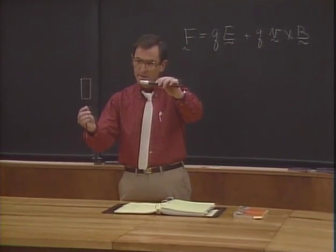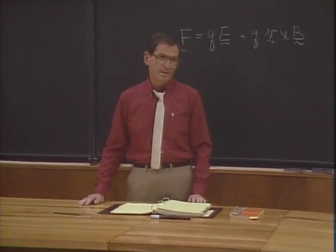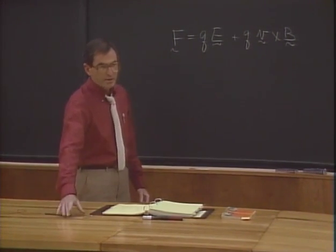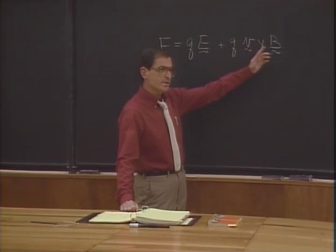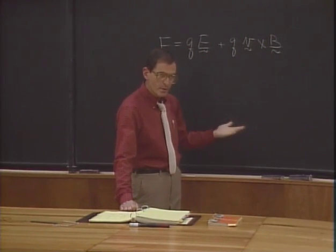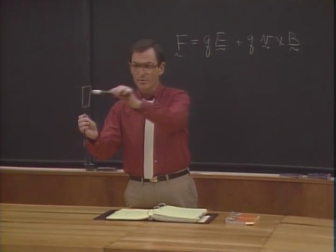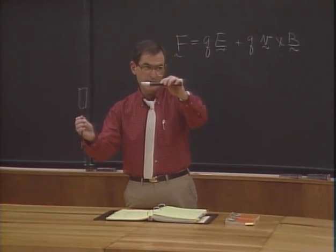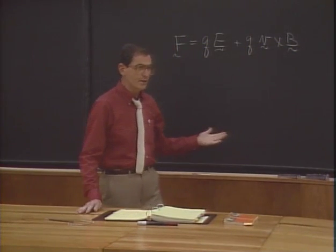Now there's another completely different, independent explanation. Suppose instead I hold the bar magnet stationary and move the loop. Exactly the same thing happens. But in this case, we have no moving magnet and no changing magnetic field. Instead, the charges in the loop are moving because I'm moving the whole loop — they have velocity v. This velocity crossed into the magnetic field of the bar magnet gives us a force which causes the current to flow.